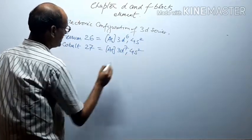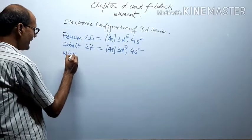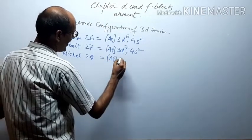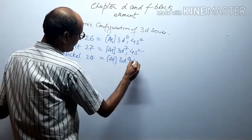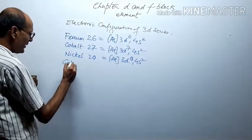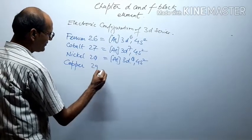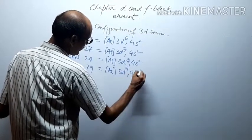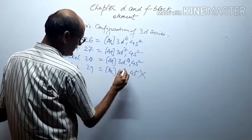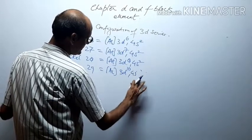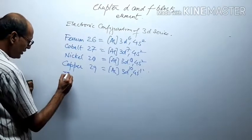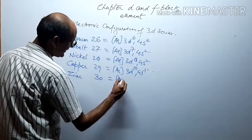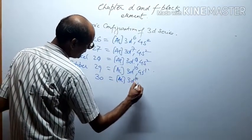Cobalt (27): [Ar] 3d⁷ 4s². Nickel (Ni, 28): [Ar] 3d⁸ 4s². Copper is a special case — the correct configuration is not 3d⁹ 4s²; we must write [Ar] 3d¹⁰ 4s¹. Zinc (30): electronic configuration [Ar] 3d¹⁰ 4s².